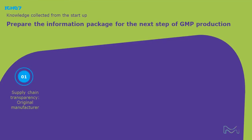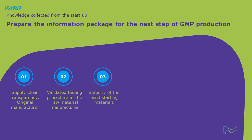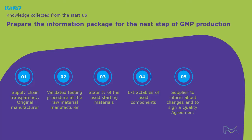Key information includes: details about the original manufacturer; knowledge about the validation of the release testing of the raw materials; information about the shelf life of the material; information about impurities, such as extractables of used components; whether the supplier is capable of informing about changes and signing a QA agreement; and whether the provided information will be available during the shelf life of the product.